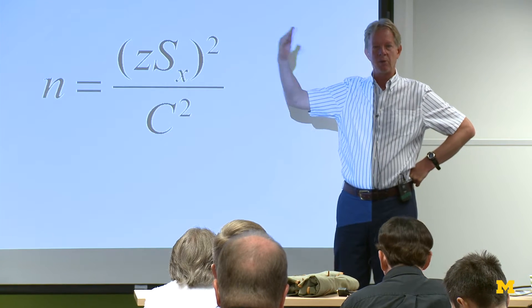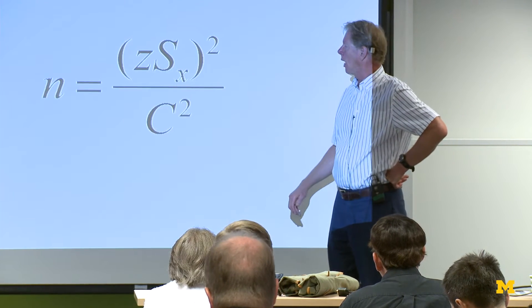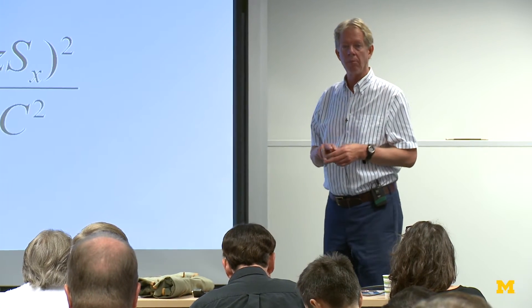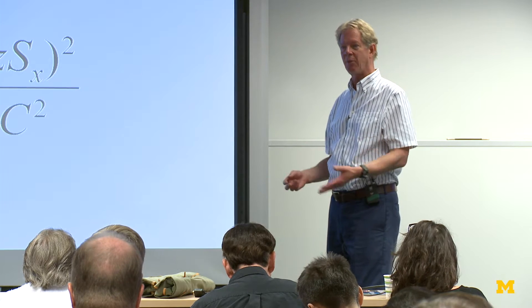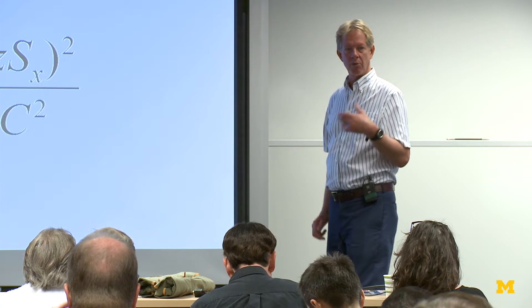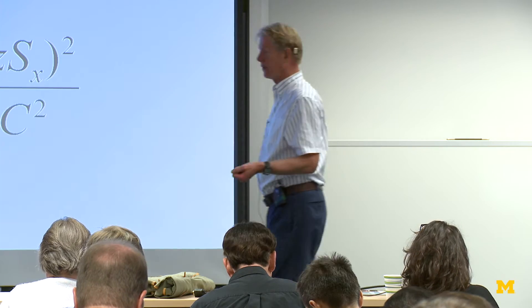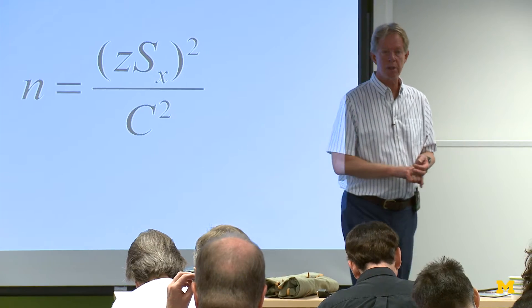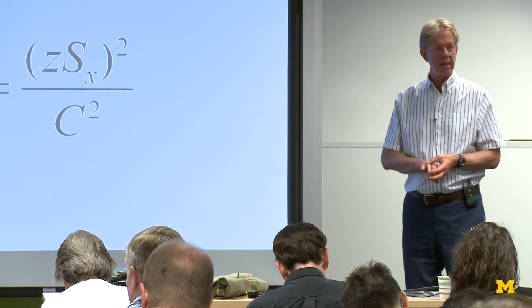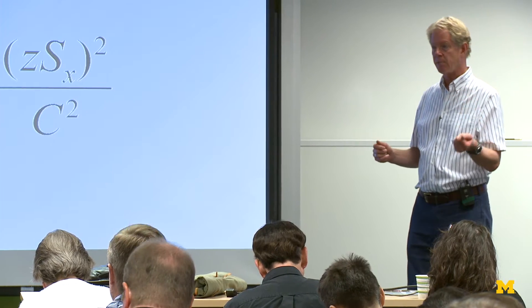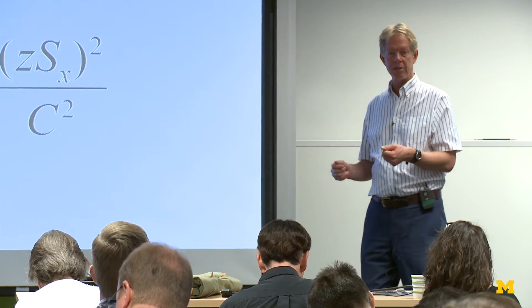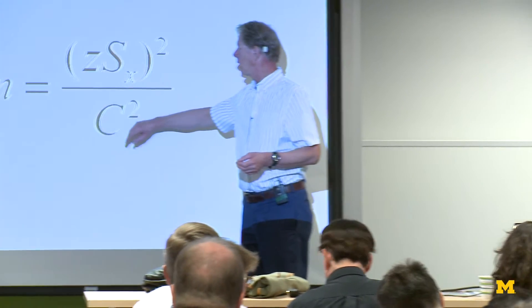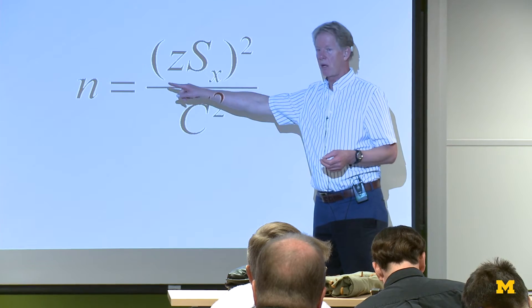This is assuming that we're coming through the door randomly. The Z has to do with confidence — how confident do we want to be that we have the right answer. The more confident we want to be, the more people we have to measure, so that again is on the top of the equation. C refers to the precision: how precisely do we need to know the answer? Do we need to know that this is plus or minus one millimeter, or plus or minus eight millimeters? The larger the number in the denominator, the smaller the n.